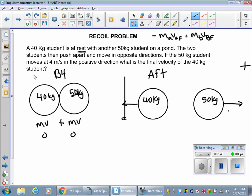The 50 kilogram student moves with a velocity of positive, or decide positive, this is negative four meters per second. So what is the final velocity of the 40 kilogram student?